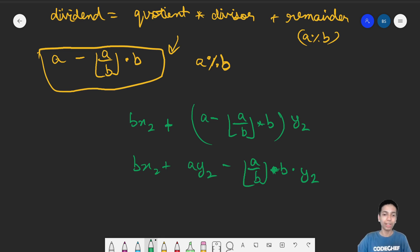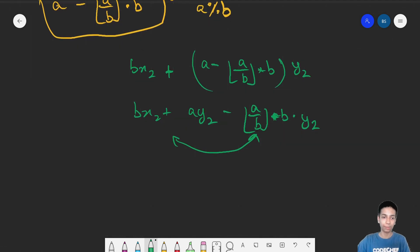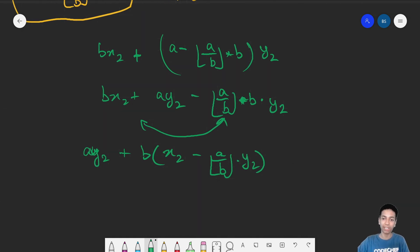Now, I can regroup these terms because they have A in common. I end up with AY2 plus B common X2 minus A by B times Y2. I have grouped these terms. And here we go. This, remember, is nothing but AX plus BY, our initial equation.